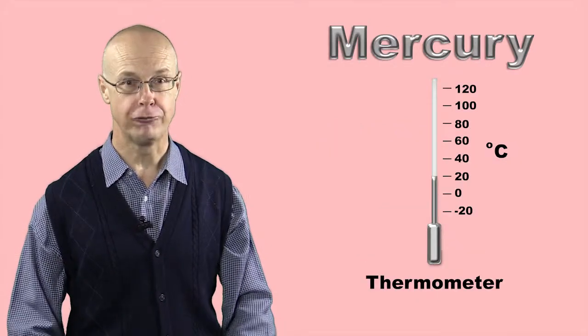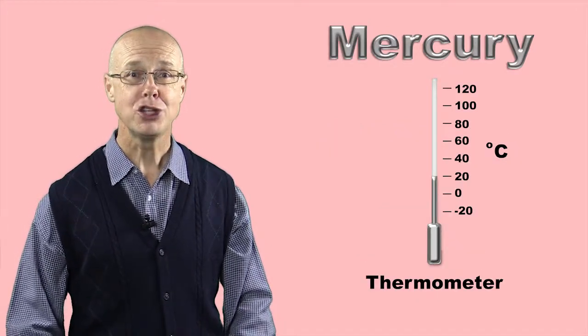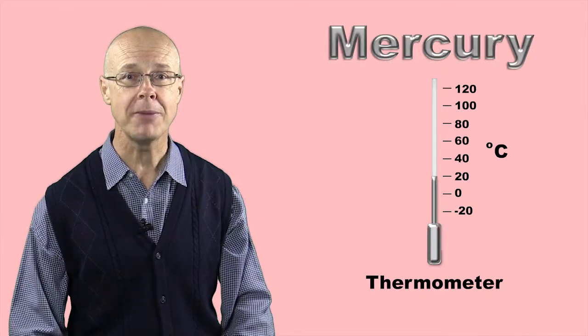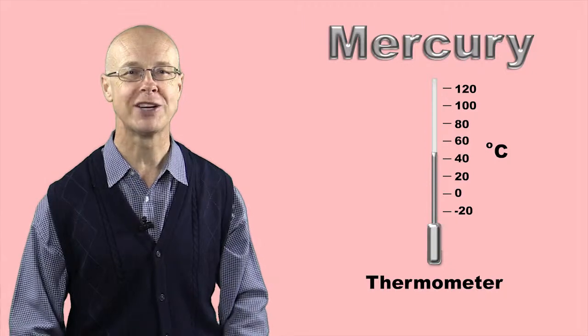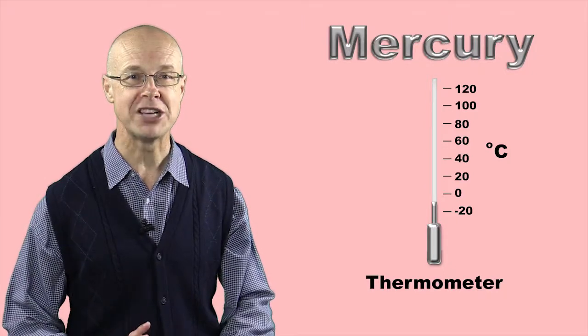In its elemental form, liquid mercury used to be commonly used in thermometers because it expands when it is hot and contracts when cold, so can be used to measure temperature.